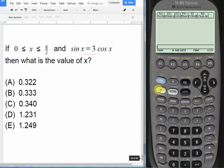First let's go to y equals. Instead of putting in the full equation, let's put in both functions separately. Let's put in sine x as y1 and 3 cosine x as y2, and we'll see why in a second.